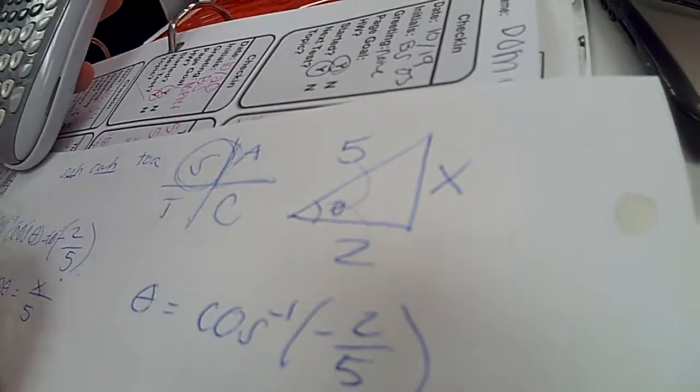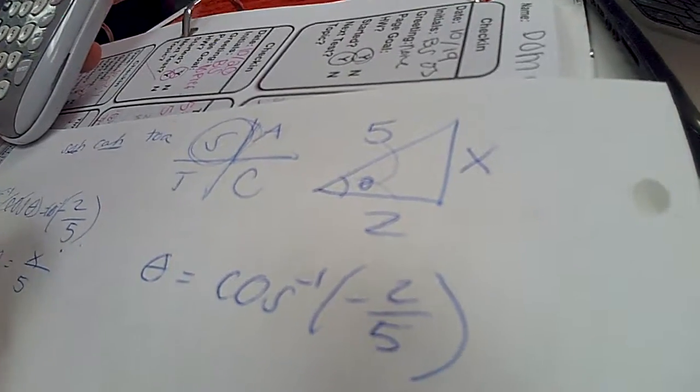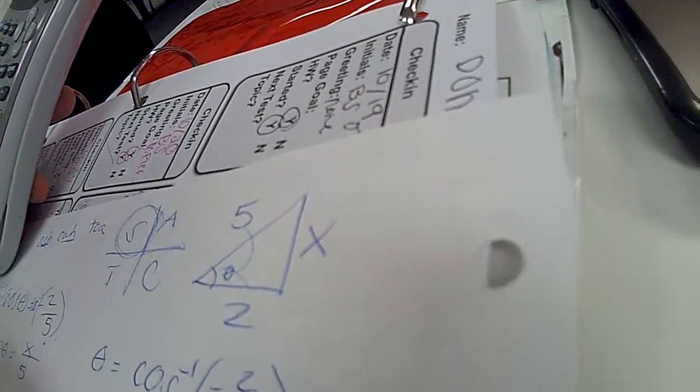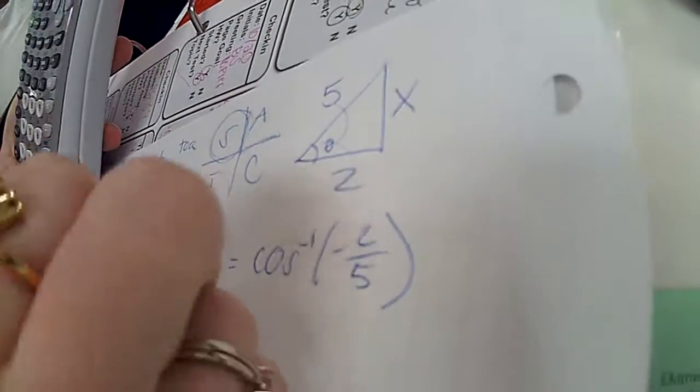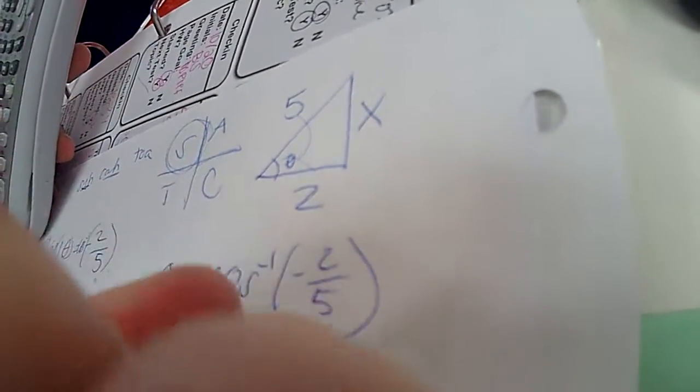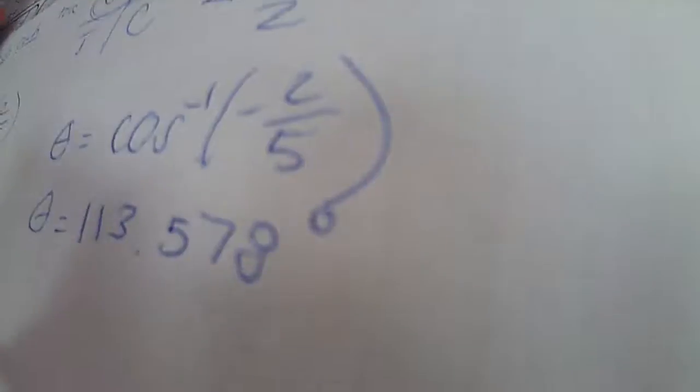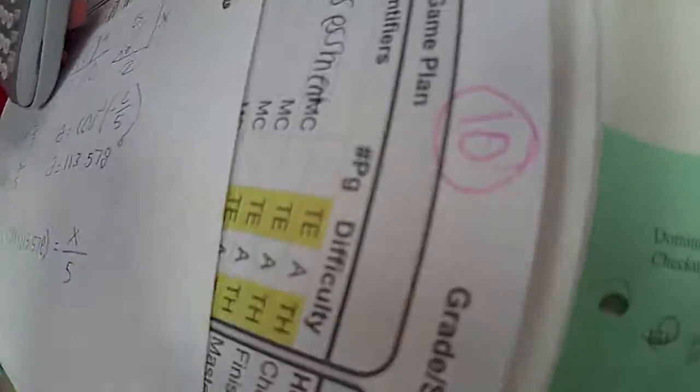Or, if you wanted to convert that to radians, that would be number over 180. So, it's like 0.63 pi. So, once you have that angle, you know that theta is equal to 113.578 degrees, right? You can plug this into here, so sine of 113.578 degrees is equal to x over 5. From here, you can multiply by 5.